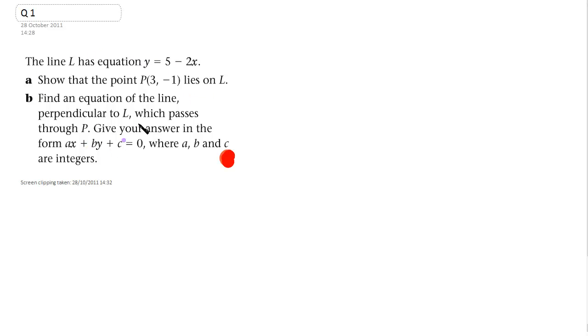OK, first of our coordinate geometry and revision questions. We've got a line that has the equation y equals 5 minus 2x. Show the point P, 3 minus 1 lies on L.